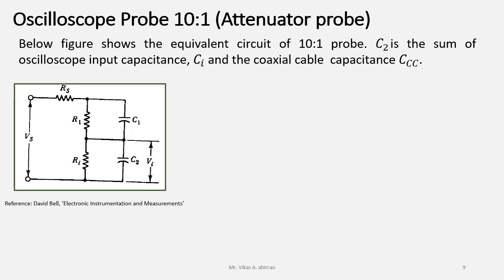The figure shows the equivalent circuit of 10:1 probe. C2 is the sum of the oscilloscope input capacitance Ci as well as the coaxial cable capacitance Ccc. i.e., C2 is equal to coaxial cable capacitance plus input capacitance of the oscilloscope.